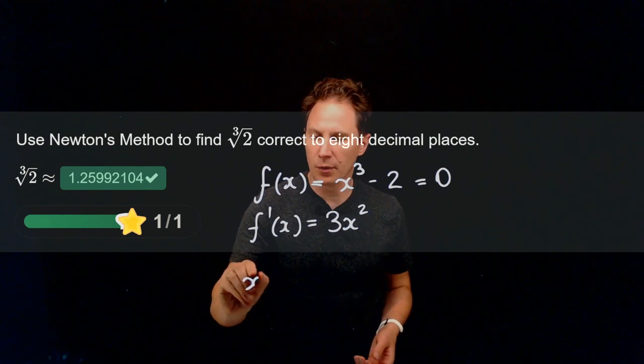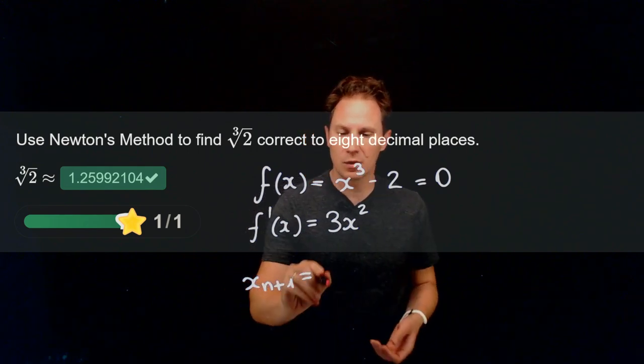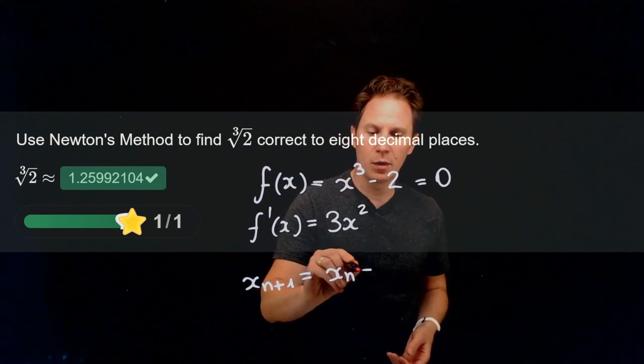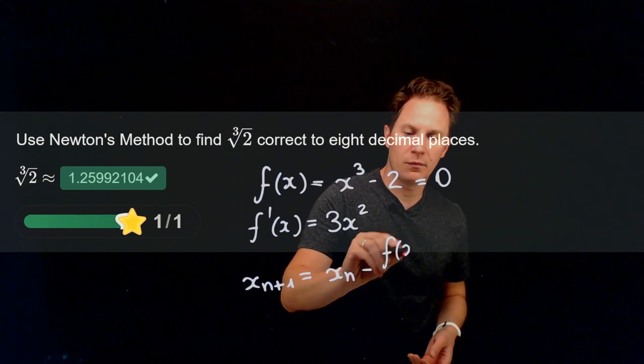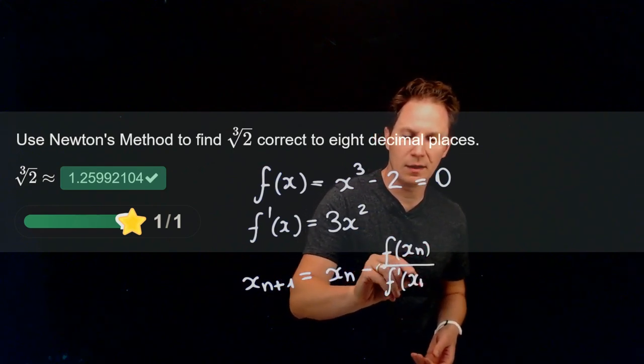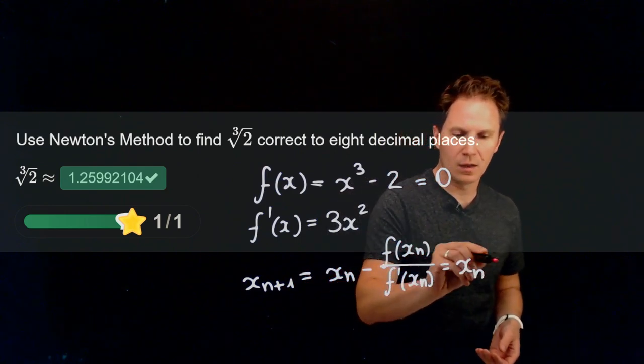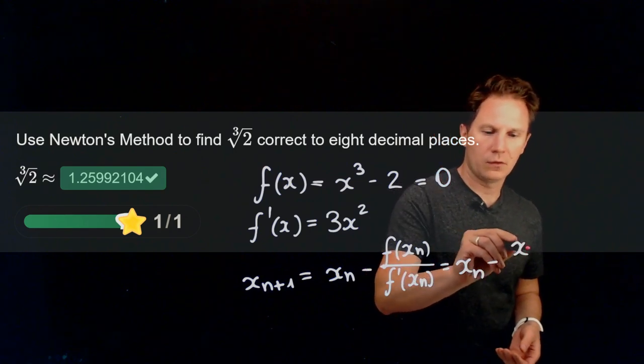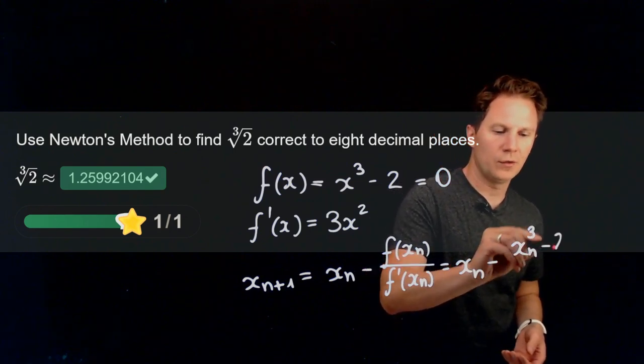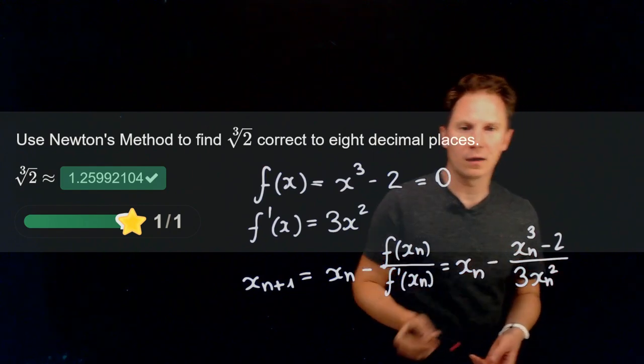Newton's method tells us that the n+1 term in the approximation would be the nth term minus the function evaluated at the nth term divided by the derivative evaluated at the nth term. So we get for xₙ₊₁: xₙ - (xₙ³ - 2)/(3xₙ²).